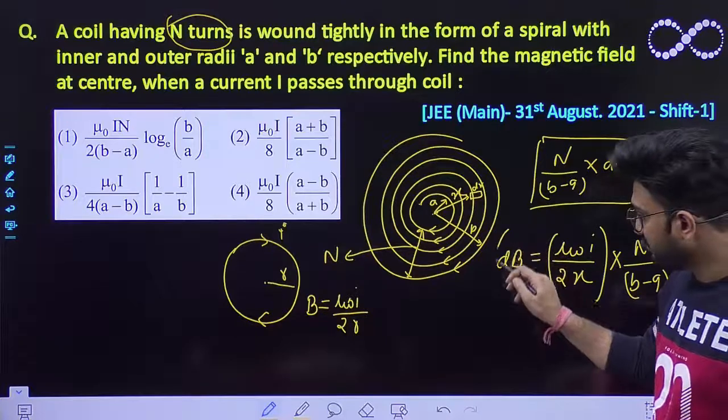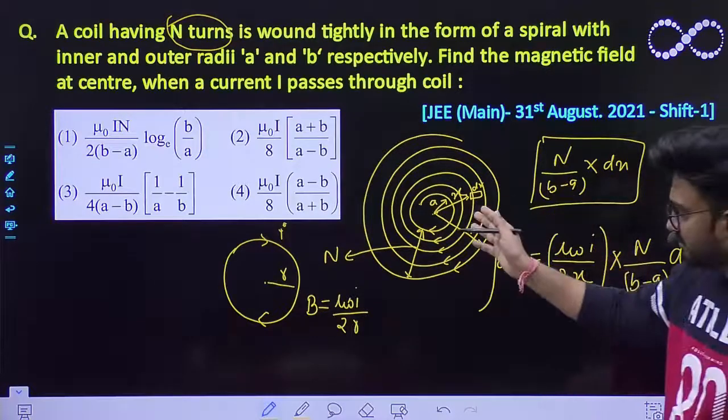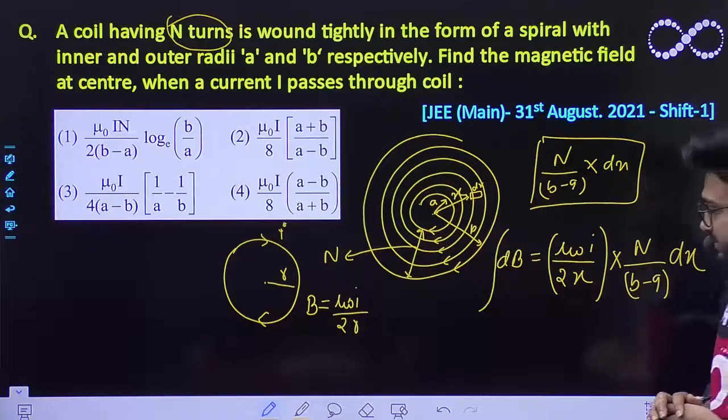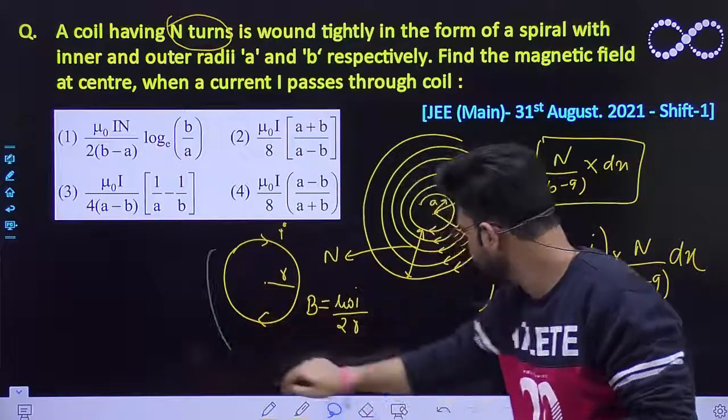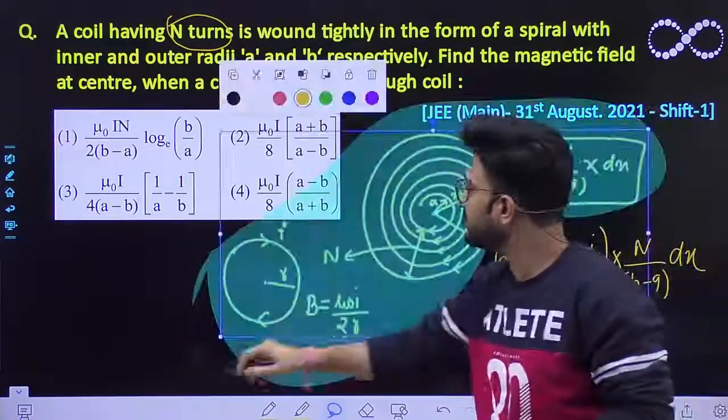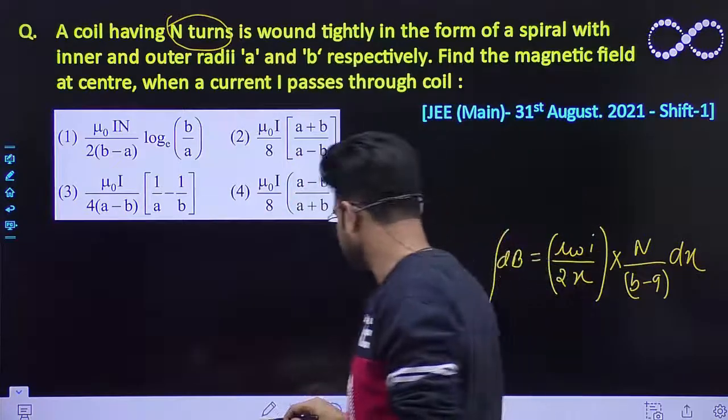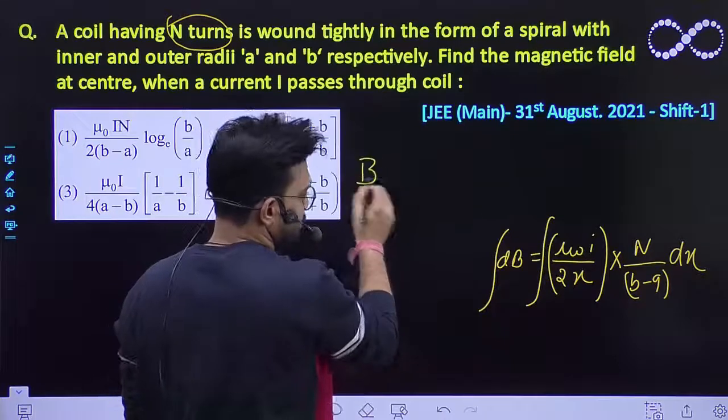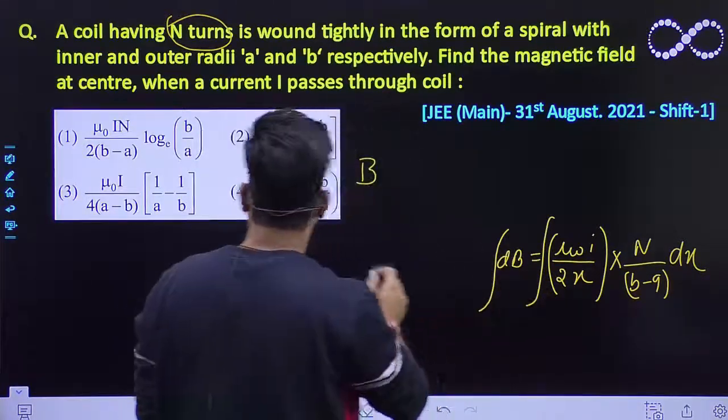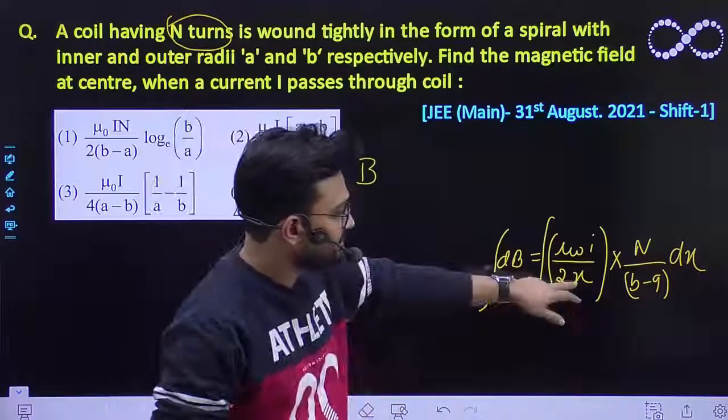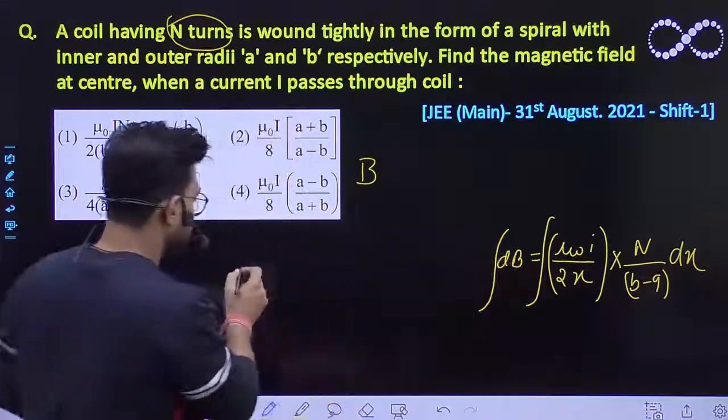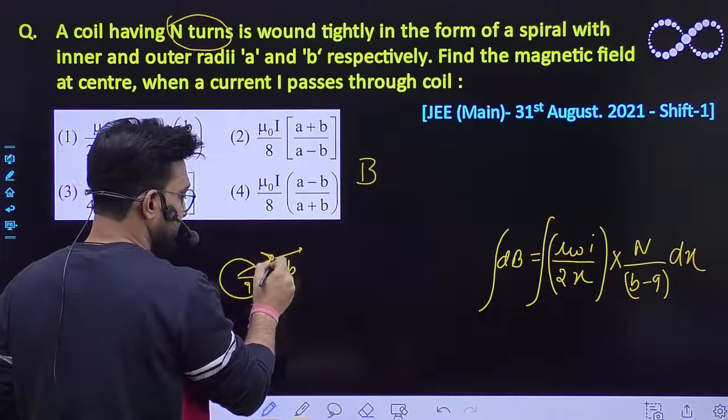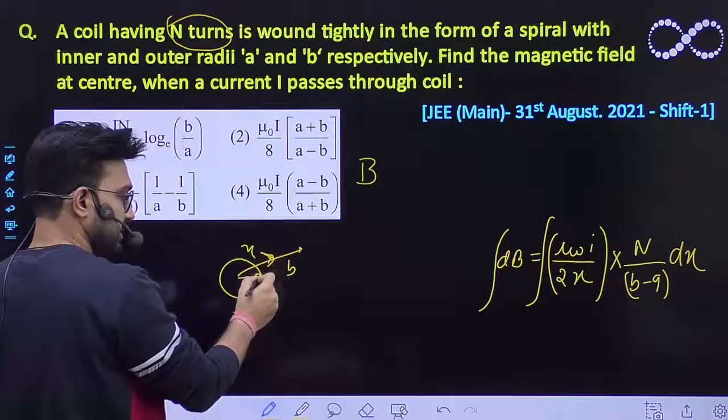So this much number of turns will produce a magnetic field of this. Now what you can do is you have to integrate it so that you can finally get the value of magnetic field because of all the turns. So now we have to integrate it and rest everything is clear. So integration of this term, let it be B, and this x varies from, this x length varies from small A to B, because the coil starts from A, it goes till B, and you have taken an arbitrary value x, and x varies from A to B.